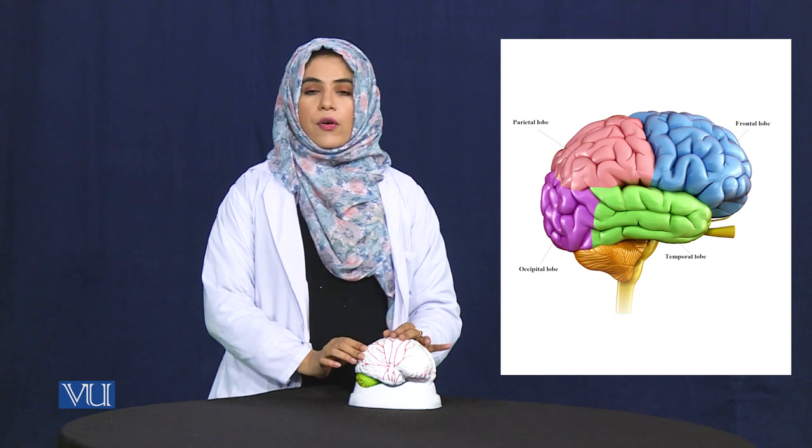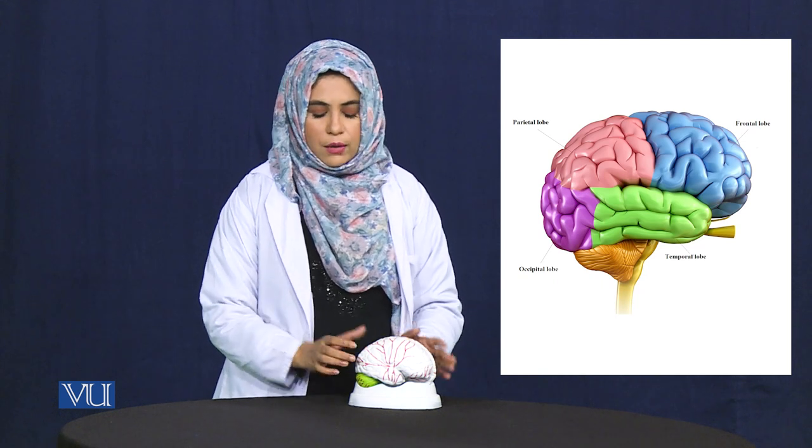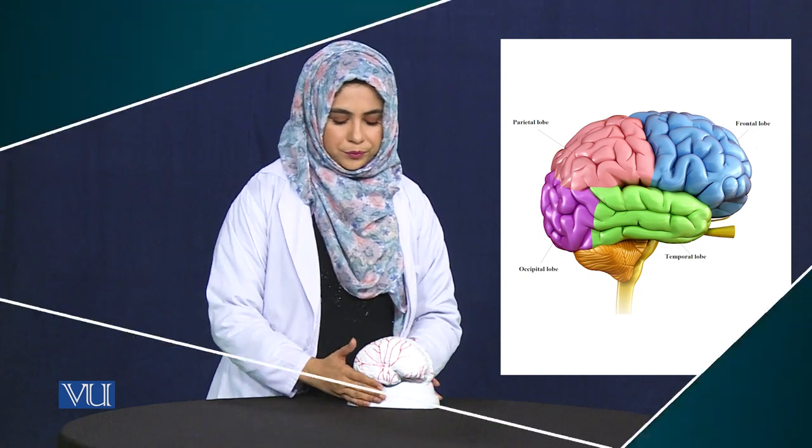The occipital lobe is responsible for visual processing. Although both hemispheres appear to be mirror images of each other, they are actually different.